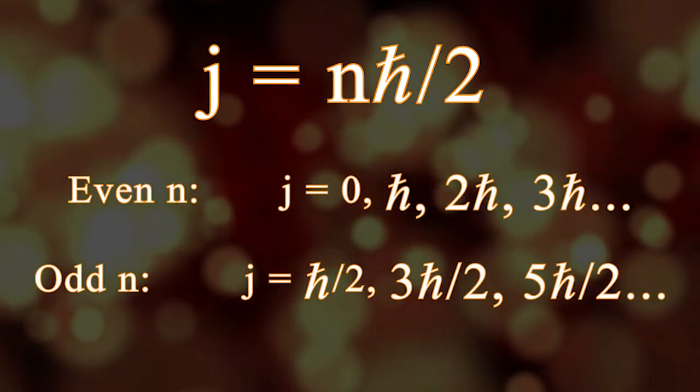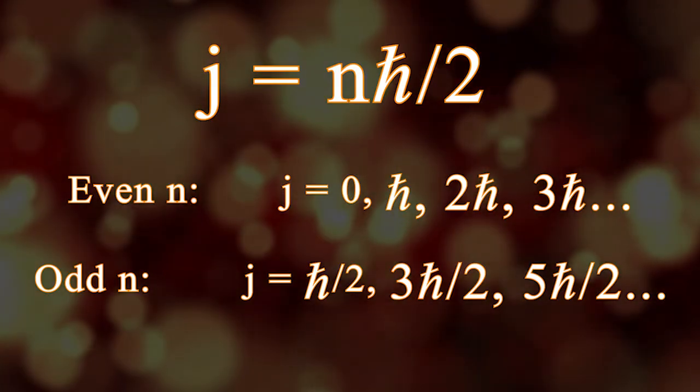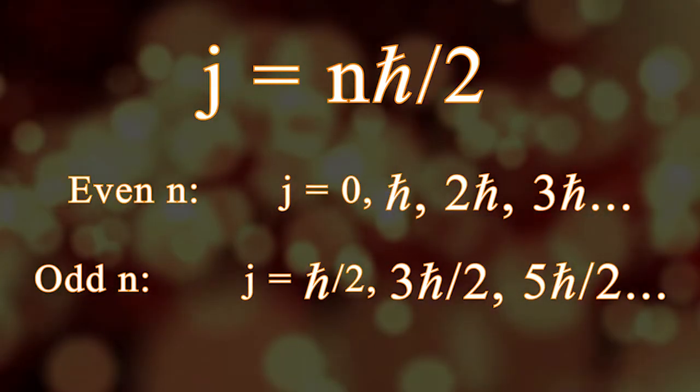It can either be an integer times the Planck constant, 0, 1, 2, and so on for even n, or a half integer value, like 1 half, 3 halves, 5 halves, and so on for odd n.